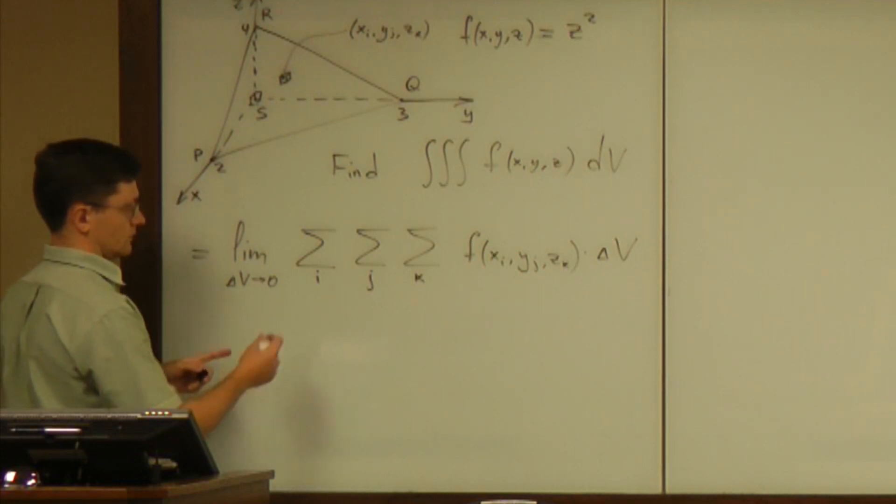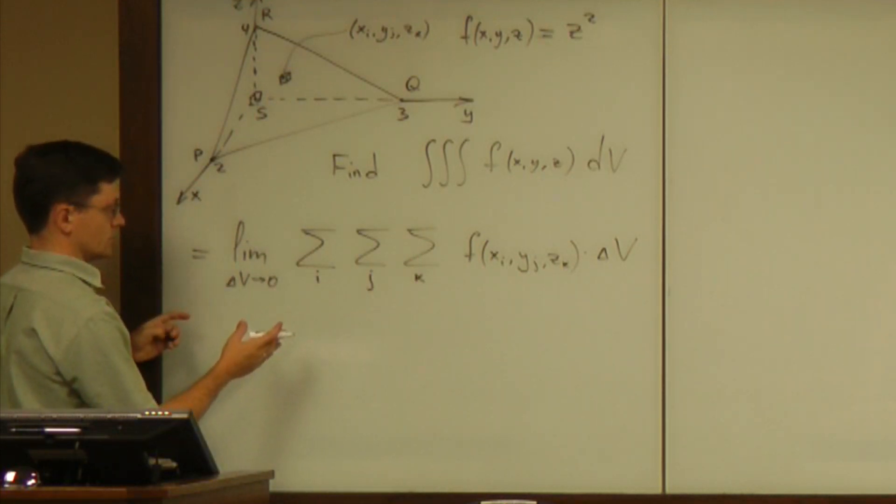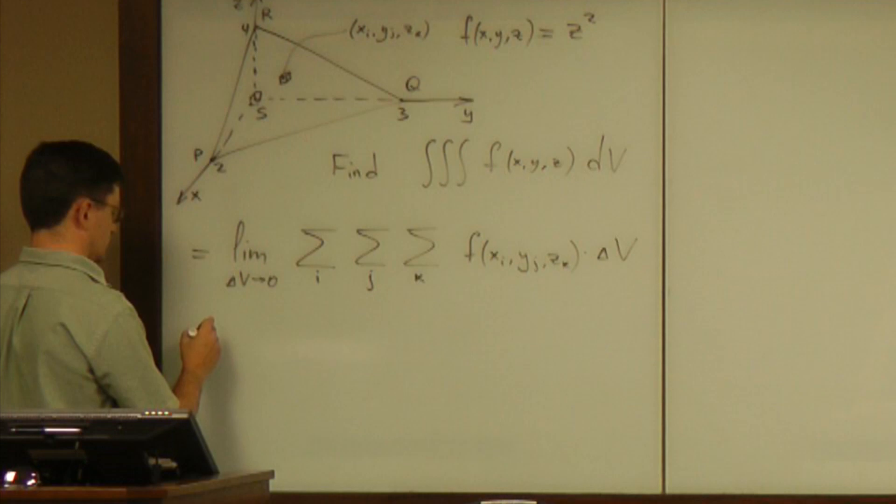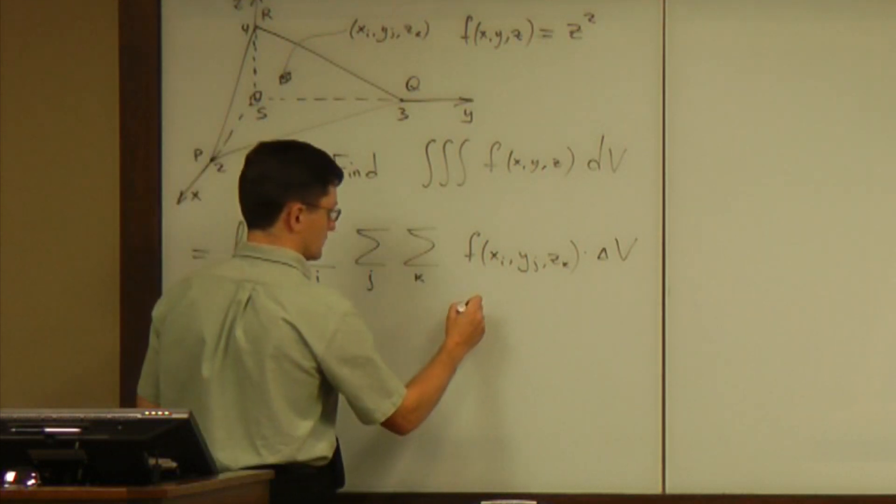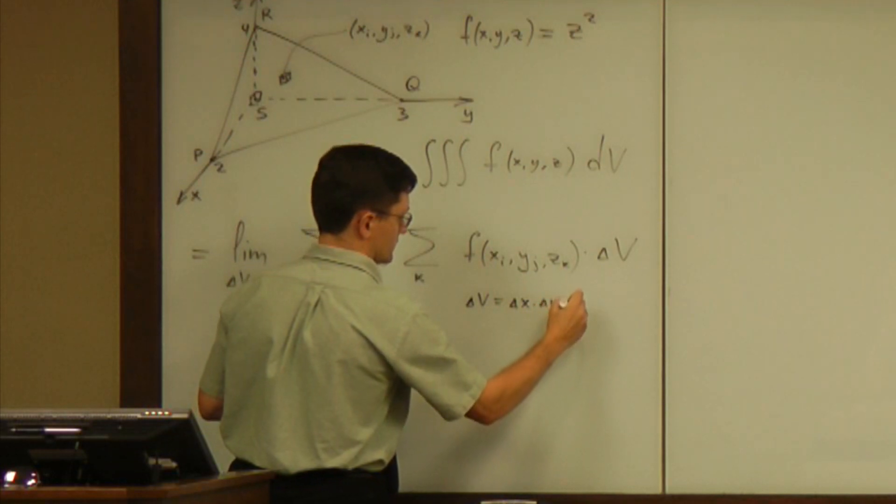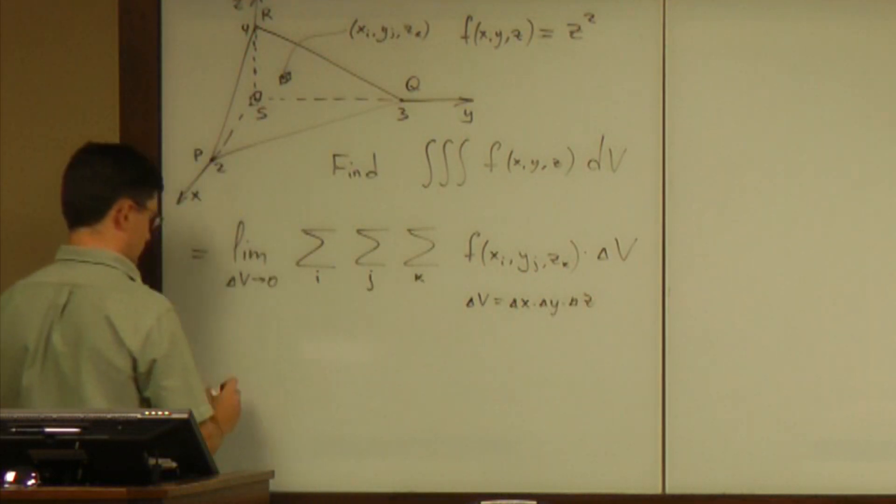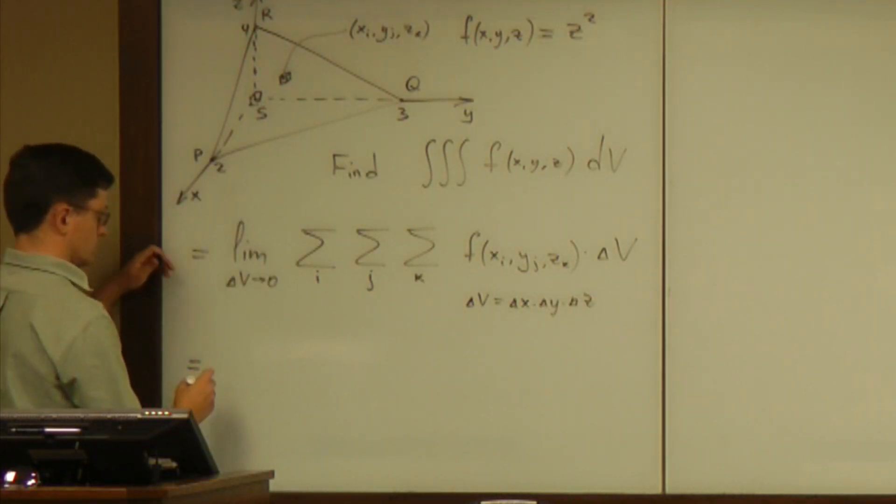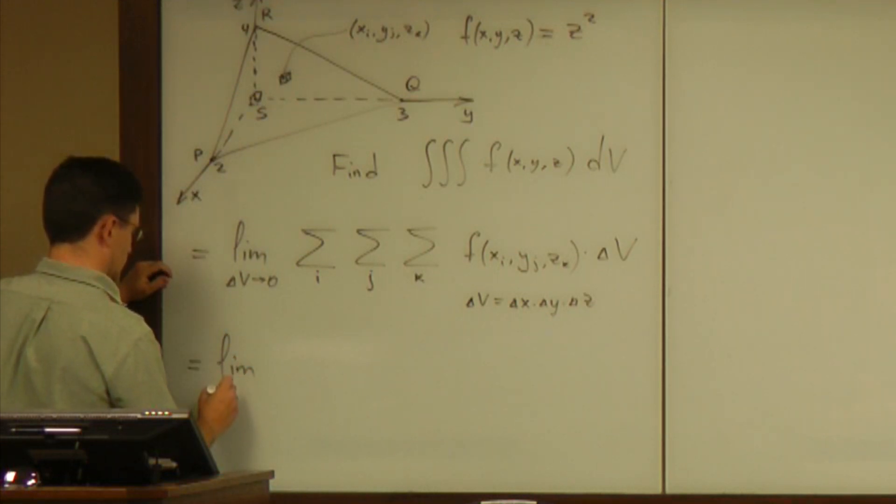And then we have to convert the whole thing to X, Y, Z completely. So, delta V becomes delta X, delta Y, delta Z, and the whole limit is limit delta X goes to zero, delta Y goes to zero, delta Z goes to zero.